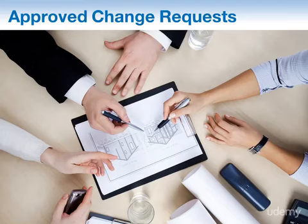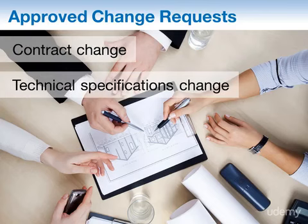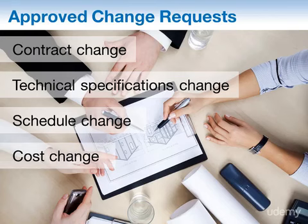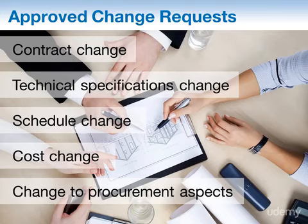Our final input is the approved change requests. These can touch pretty much anything in your relationship with the seller — a change to the contract, technical specifications, schedule, cost, or any aspect of the procurement. We need the approved change requests as inputs so that we know about them and can control their correct implementation and execution. It would be detrimental if we had a schedule change on our contract and nobody knew about it. And with that, we have come to the end of Part 1 of Control Procurements. See you in Part 2. Toodaloo!